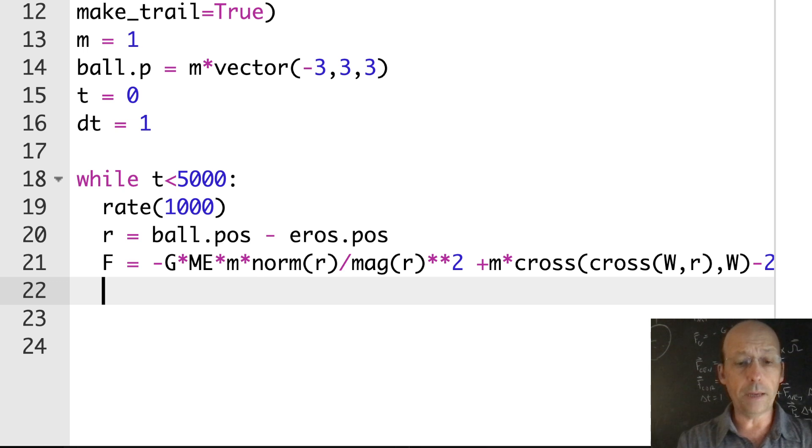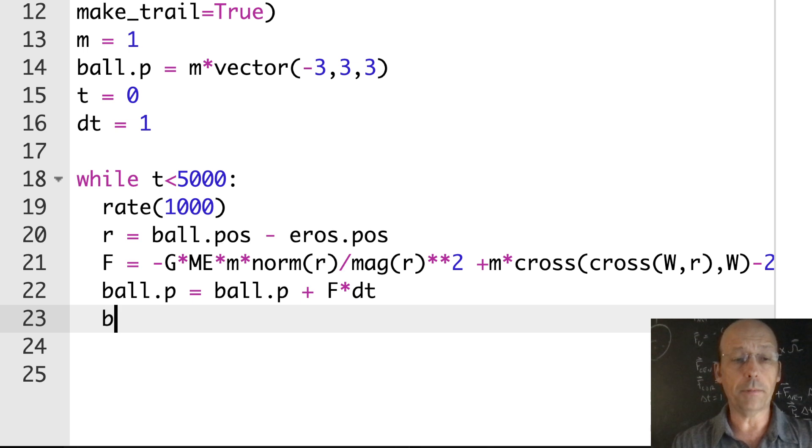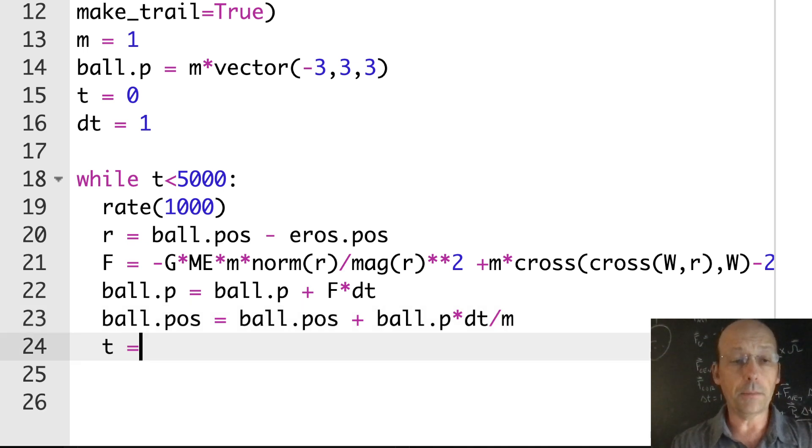Now I can update my momentum. Ball dot p equals ball dot p plus f times dt. I can update my position: ball dot pos equals ball dot pos plus ball dot p times dt divided by m. Then I can update time: t equals t plus dt. Let's run the sucker. I didn't even save it, I should save it.